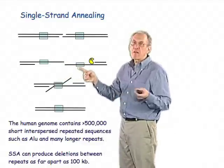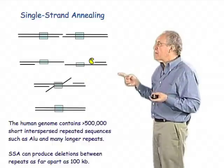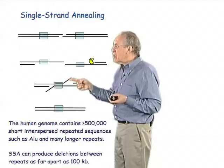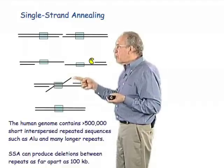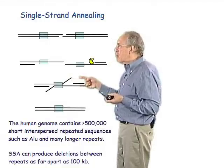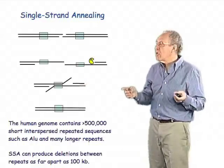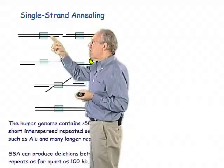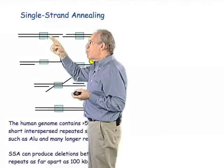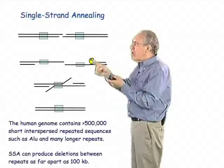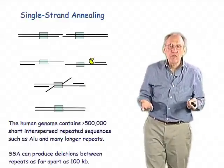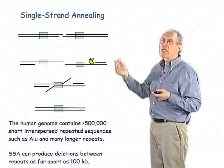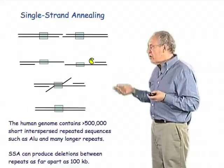Those tails can be clipped off, and we know the enzymes that do that. And once they have clipped these regions off, DNA polymerases can come and fill in these little gaps, and what one ends up with is a deletion, which has removed all the DNA sequences from the point where the two repeated sequences are. So this is a potent source of deletion, especially in cells that have much repeated DNA in their genomes.